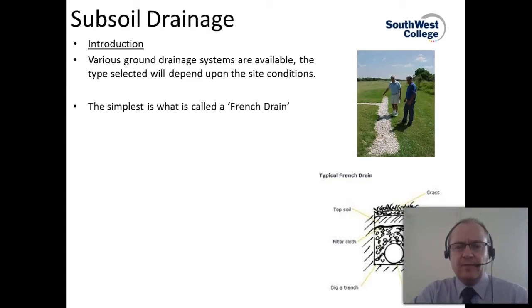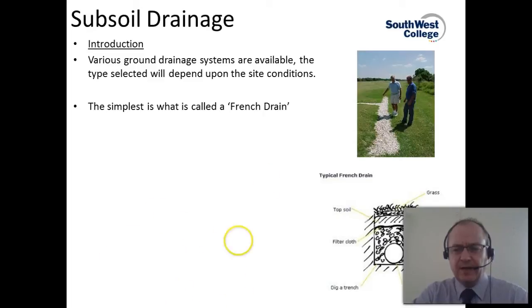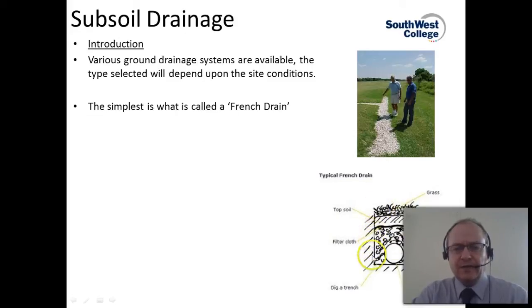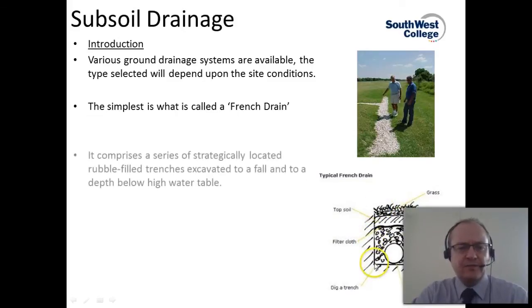The simplest type of external drainage is what is called a French drain, as you can see here on the right-hand side — a small schematic showing what a typical French drain consists of. Basically it is a trench with a drain pipe in it that is covered with gravel or aggregate, then a filter cloth at the top to stop the aggregate silting up, then some topsoil and then grass growing on top.